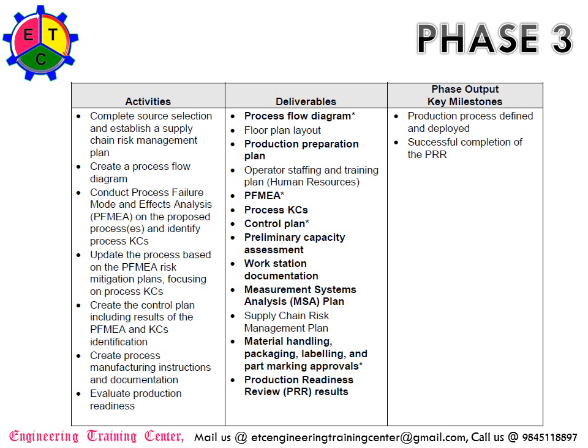Additional deliverables include supply chain risk management plan, material handling, packing, labeling and part marking approvals, production readiness review, and PDR review results. The major deliverables in Phase 3 are essentially getting ready for production. The concepts are frozen at the critical design review — concept is ready — and in parallel, production is made ready through risk analysis, since the team has been involved from Phase 1. This allows you to do process flow diagram analysis, identify risks, put mitigation plans in place, control key characteristics, complete preliminary capacity assessment, workstation documentation, MSA, material handling, packaging, labeling, part marking approvals, and production readiness reviews.